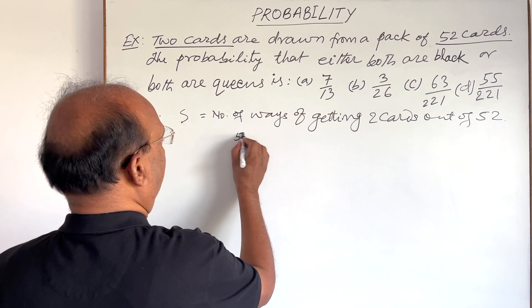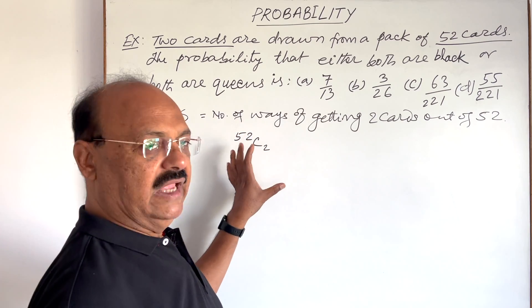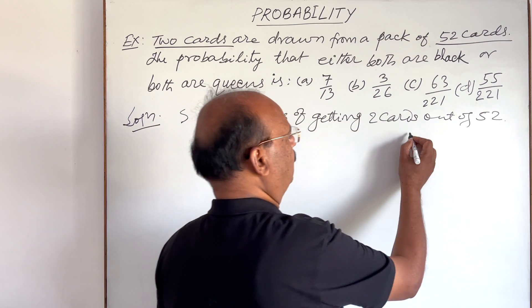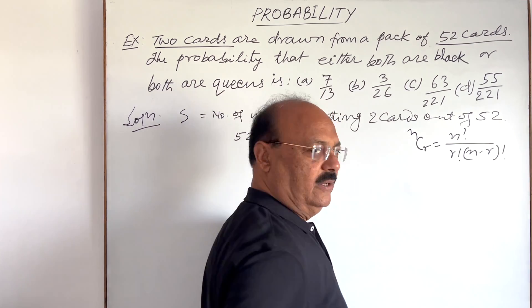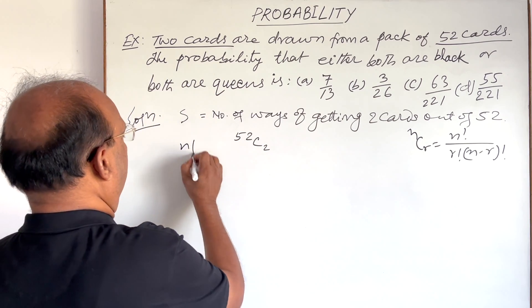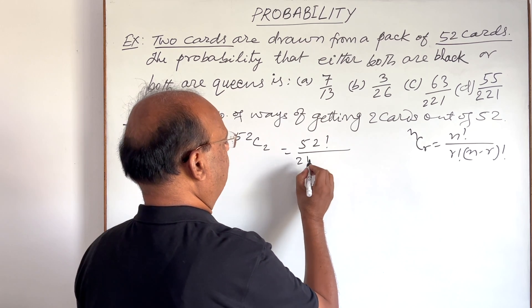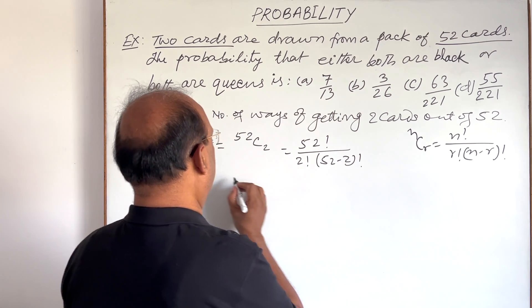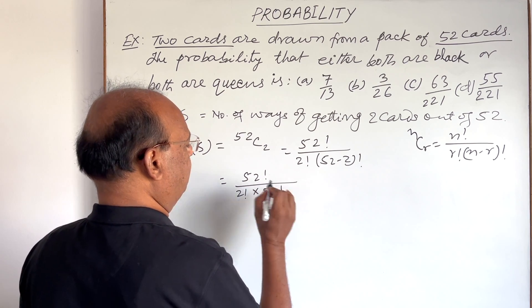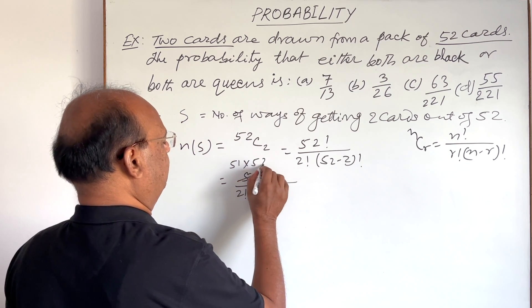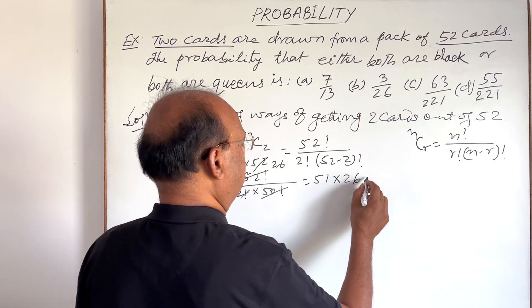So n(S) = 52C2. We will use the formula nCr = n! / (r! × (n−r)!). This gives us 52! / (2! × 50!), and 50! cancels out, leaving 51 × 52 / 2, which simplifies to 51 × 26.